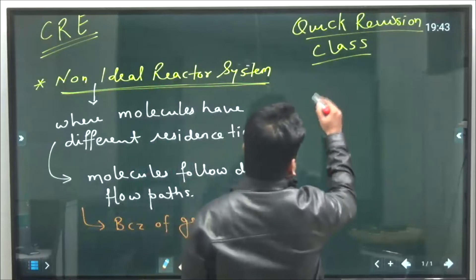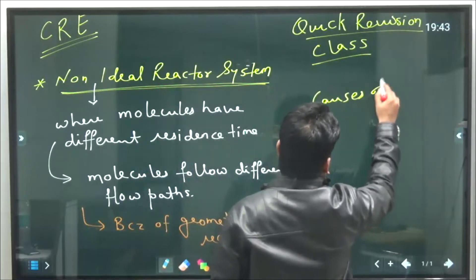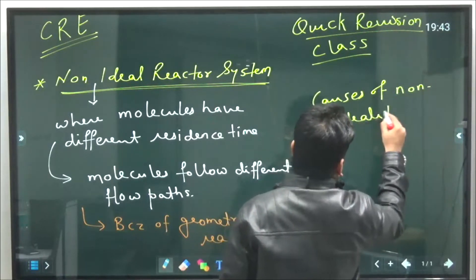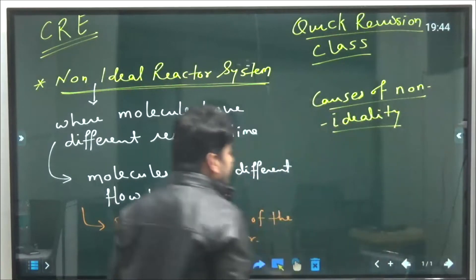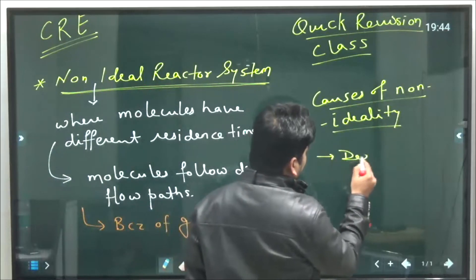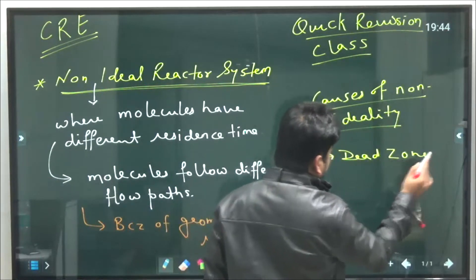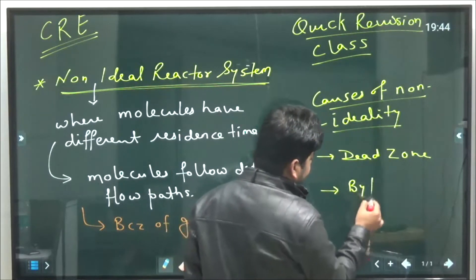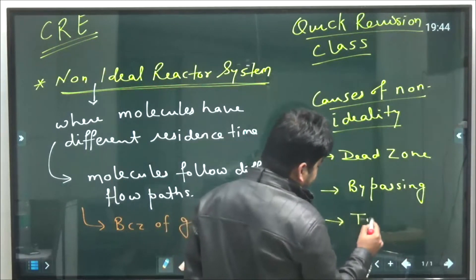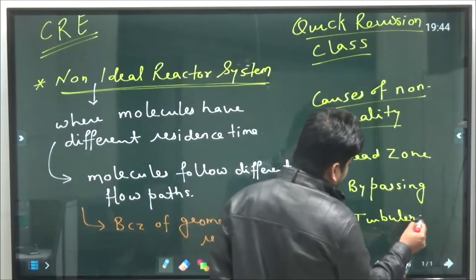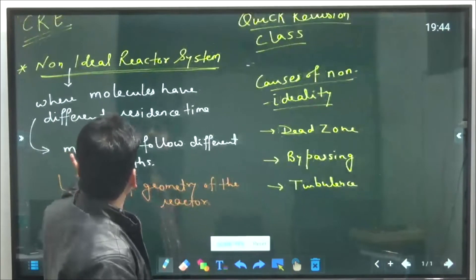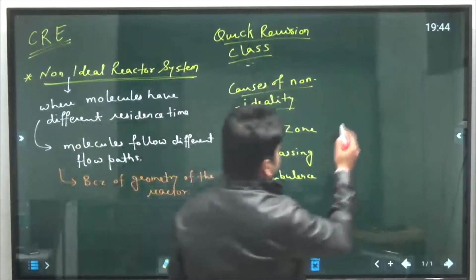There are three main causes of non-ideality: first is the dead zone, second is bypassing, and third is turbulence.